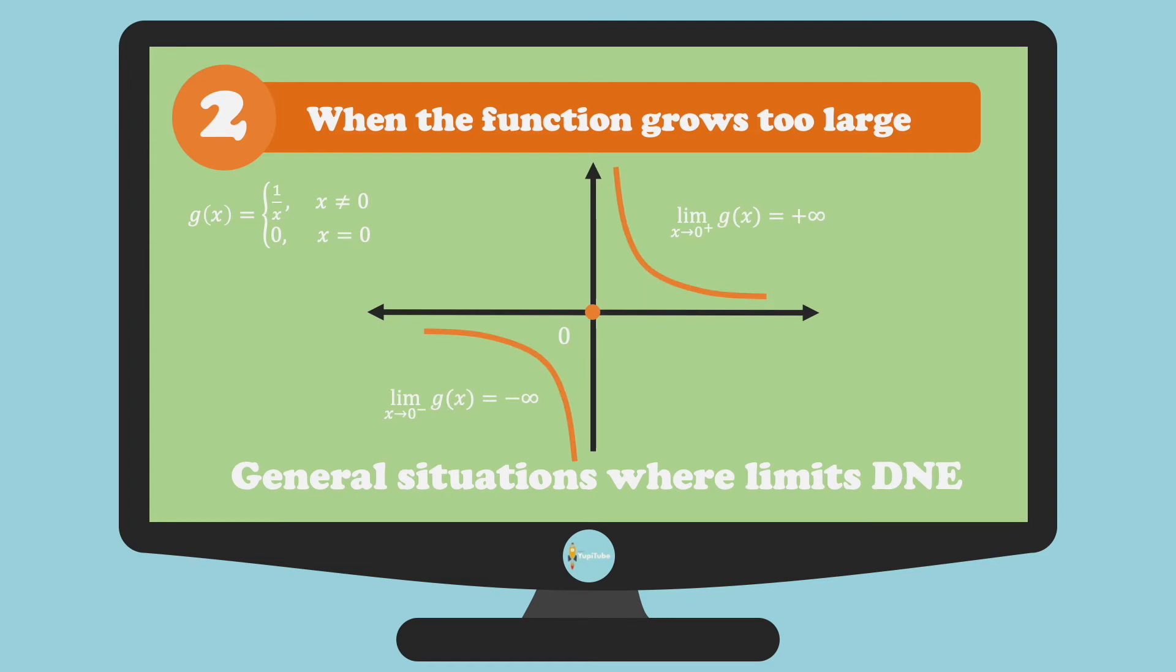And the limit of g(x) as x approaches 0 from the right is equal to positive infinity. Take note that the limit that takes on infinity as its value is not valid, since infinity is not a number and more of a concept.